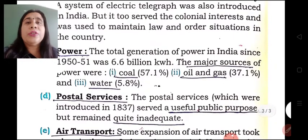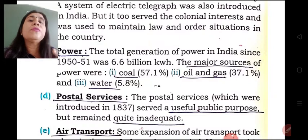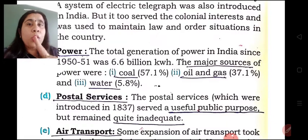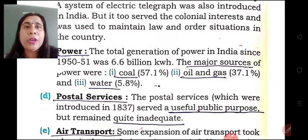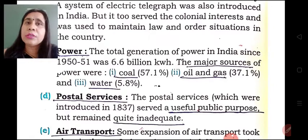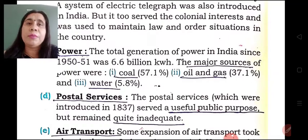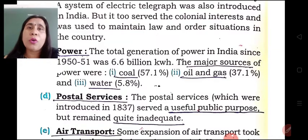The third area is power generation, that is, electricity. Electricity and power generation was also developed during British times. The major sources of electricity were coal, oil and gas, and water. Hydroelectricity was not much developed — it was nearly 5.8 percent. The basic source of electricity generation was coal, which contributed nearly 57.1 percent of power generation.